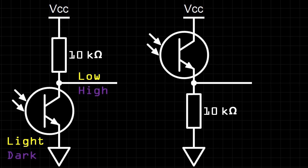Sometimes it will be useful to have the outputs flipped, which can be done simply by switching the order of the resistor and phototransistor. Here the output is high when light is detected, and low when there is no light.